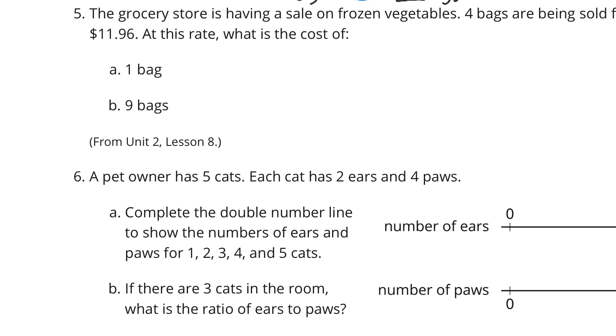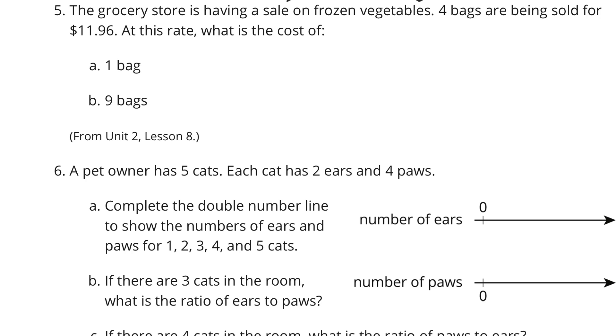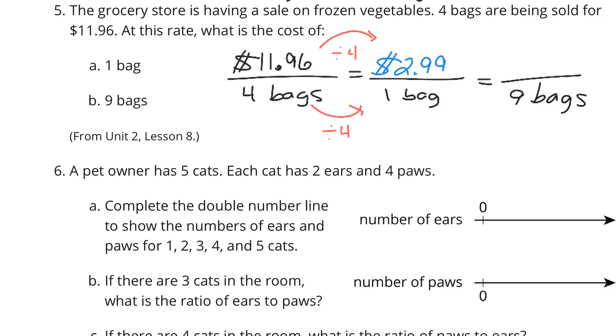Continuing on. The grocery store is having a sale on frozen vegetables. 4 bags are being sold for $11.96. What's the cost of 1 bag and 9 bags? Well, $11.96 for 4 bags. To get this to 1 bag, let's divide by 4. And if I take $11.96 and divide that by 4, I get $2.99. And now for 9 bags, I can multiply the 1 by 9 to get to 9 bags. So if I take the $2.99 and multiply it by 9, I'm going to end up with $26.91.